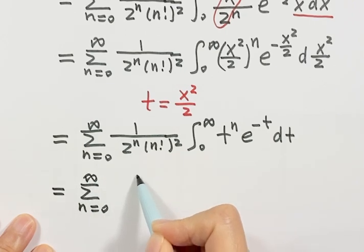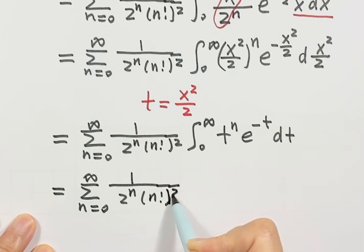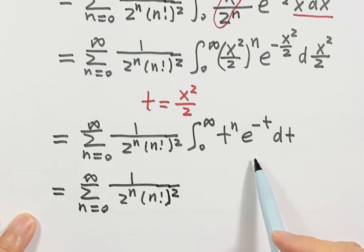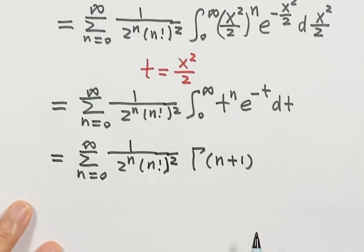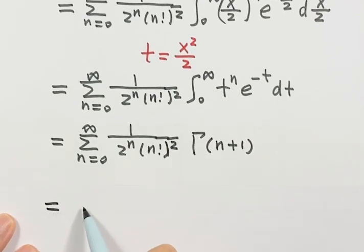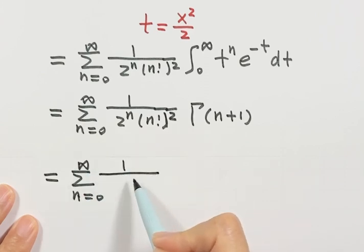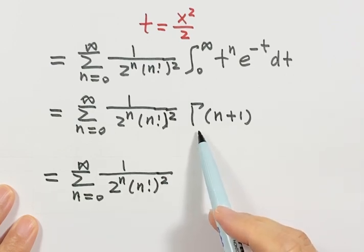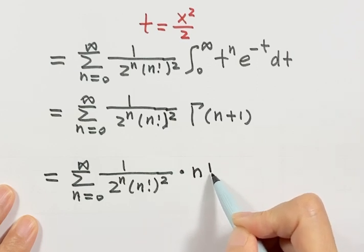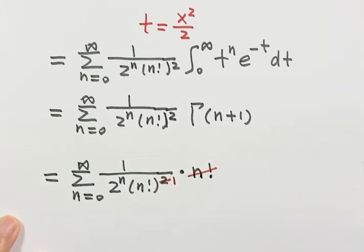So then we need to figure out what this integral is. Maybe you already recognize this integral — there is a name for it. That is the gamma function: Gamma of n plus 1. So this integral equals Gamma of n plus 1. We need to use the important property: when n is a positive integer, Gamma of n plus 1 equals n factorial. So this n factorial can cancel out one n factorial from the bottom.